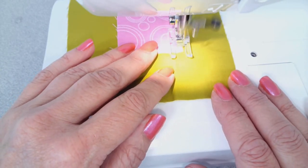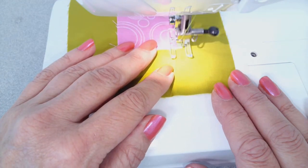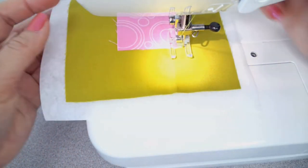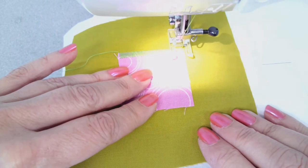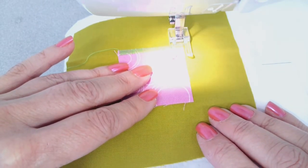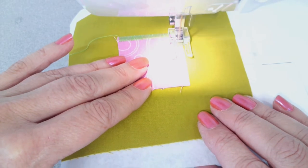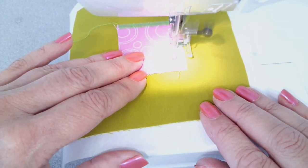As I come to the corner, it's important to stop with the needle in the outside edge of the fabric. So I'm going to stop right here, lift up and pivot, and then I can continue on down the next side. And that gives us a nice square corner. And again, I have a perfect view of my needle right at the outside edge of my applique fabric.